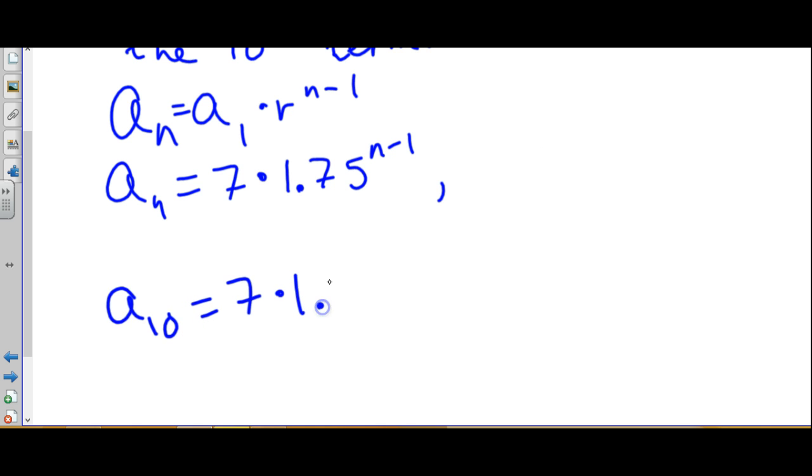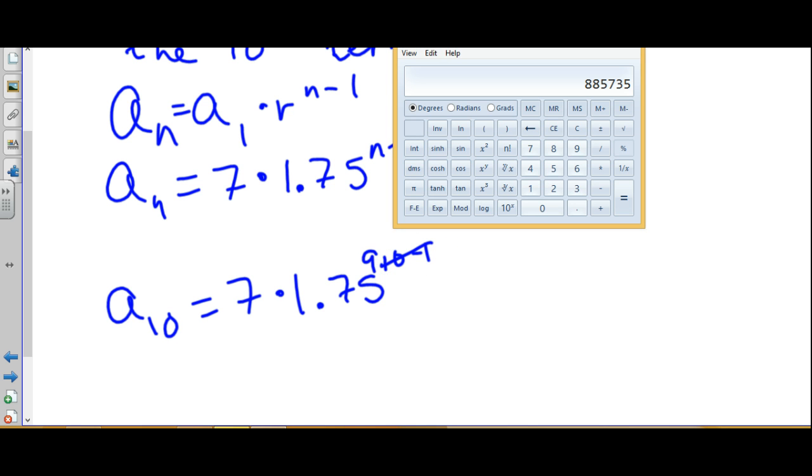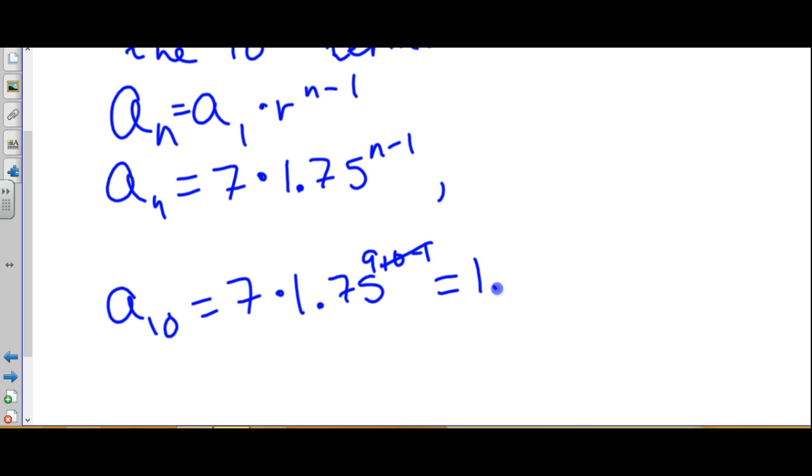So the tenth term, we plug in 10, 10 minus 1 is 9, and then plug it into a calculator. 7 times 1.75 raised to the ninth, and we get a big long decimal. We're just going to do 2 digits after. The 2 would round up to a 3 because the 5 next to it is 5 or bigger, so 18850.73. So the formula would be this, and the amount would be 18850.73. That is the tenth term.